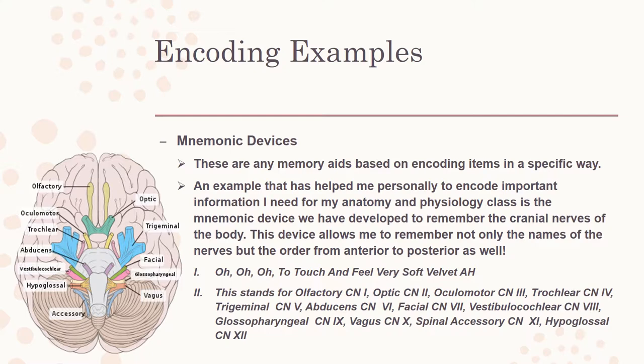It is: O O O to touch and feel very soft velvet AH. This stands for olfactory cranial nerve 1, optic cranial nerve 2, oculomotor cranial nerve 3, trochlear cranial nerve 4, trigeminal cranial nerve 5, abducens cranial nerve 6, facial cranial nerve 7, vestibulocochlear cranial nerve 8, glossopharyngeal cranial nerve 9, vagus cranial nerve 10, spinal accessory cranial nerve 11, and hypoglossal cranial nerve 12.